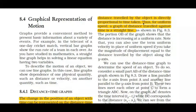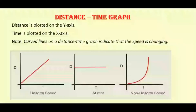In uniform motion, as time increases, distance increases at a constant rate. A straight line in a distance-time graph indicates that the motion of an object is uniform motion. If the graph shows a straight line like this, it indicates uniform motion.